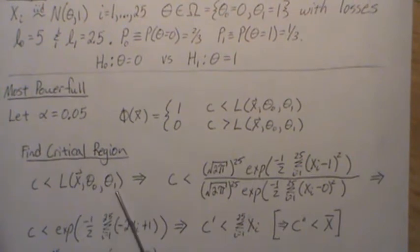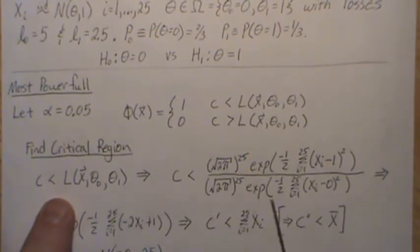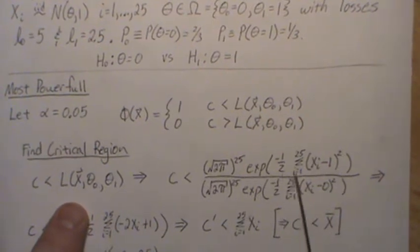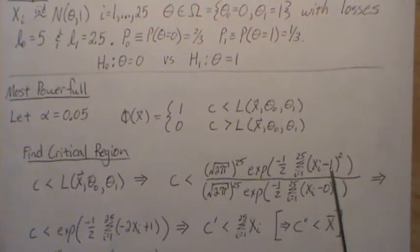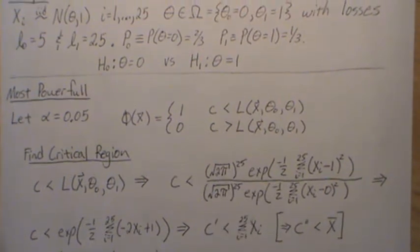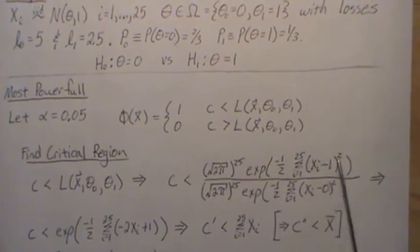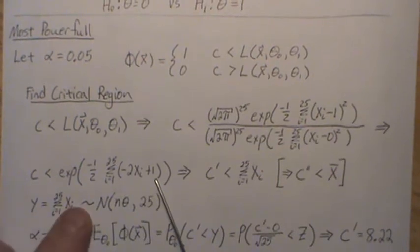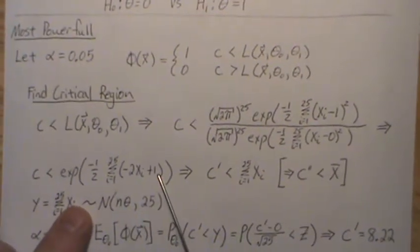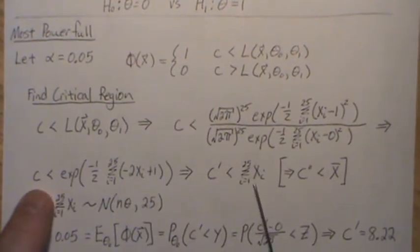Let's find the critical region. The likelihood ratio is the density under the alternative divided by the density under the null — mean equals 1 over mean equals 0. The square root of 2-pi terms raised to the 25th power cancel. Moving the exponential to the numerator changes the sign, and the sums of squares cancel when we expand, leaving us with the term involving negative 2x plus 1. Multiplying by one-half and taking the log of both sides, we get the sum of x_i's greater than some constant.